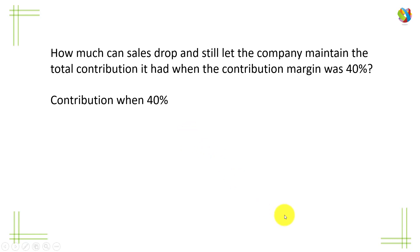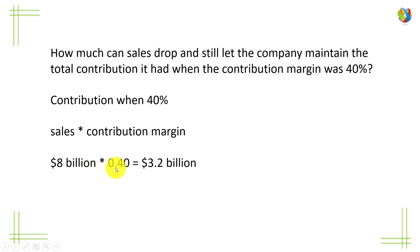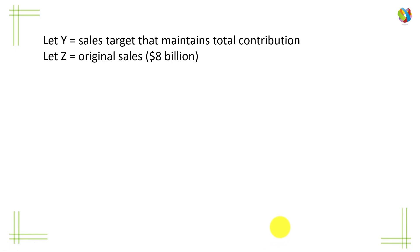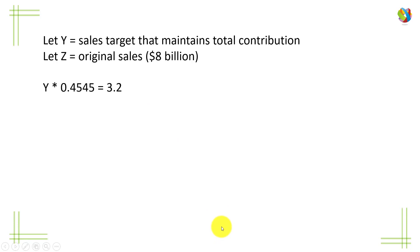When it was 40%, total contribution equals sales times contribution margin. So $8 billion times 40% gives a total contribution of $3.2 billion. Remember that. Let Y be the sales target that maintains the contribution, and Z be the original sales of $8 billion. So Y times 45.45% equals 3.2. Rearranging: Y equals 3.2 over 0.4545.